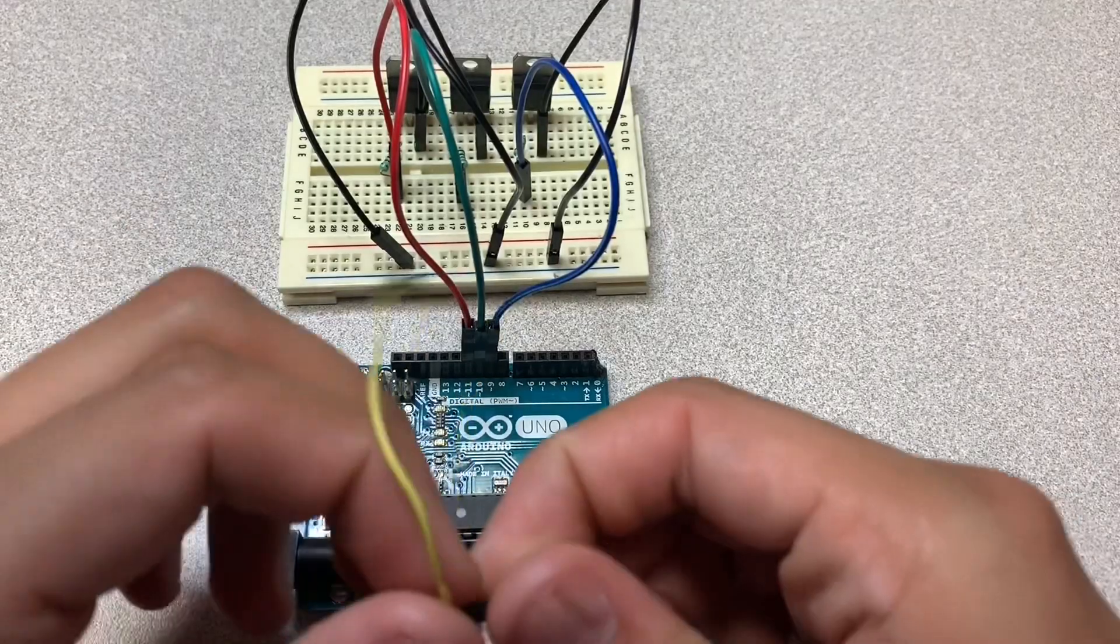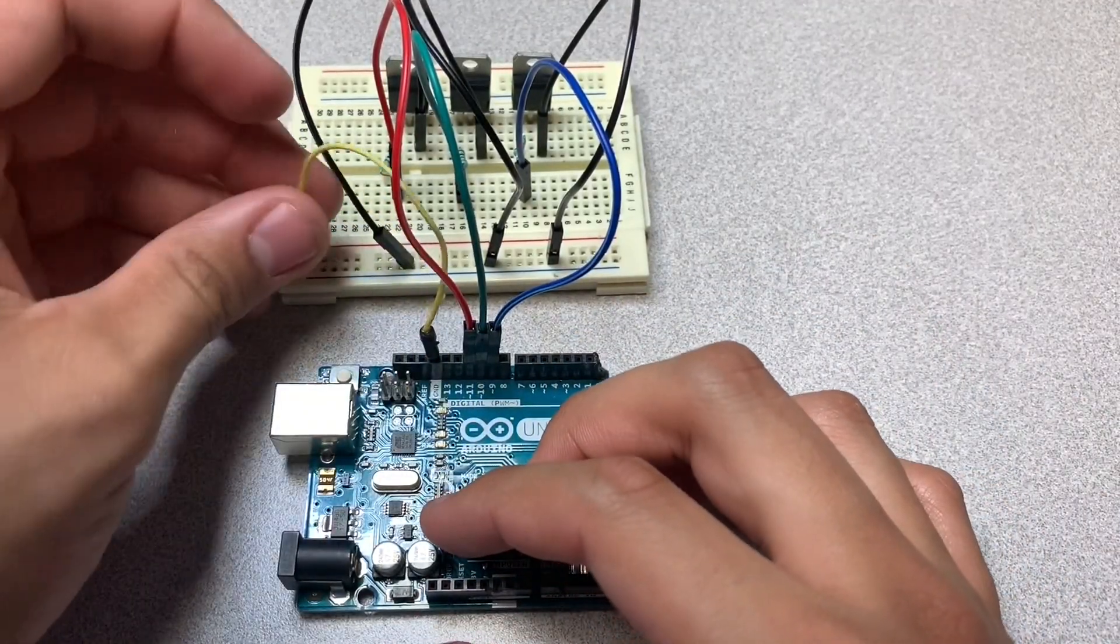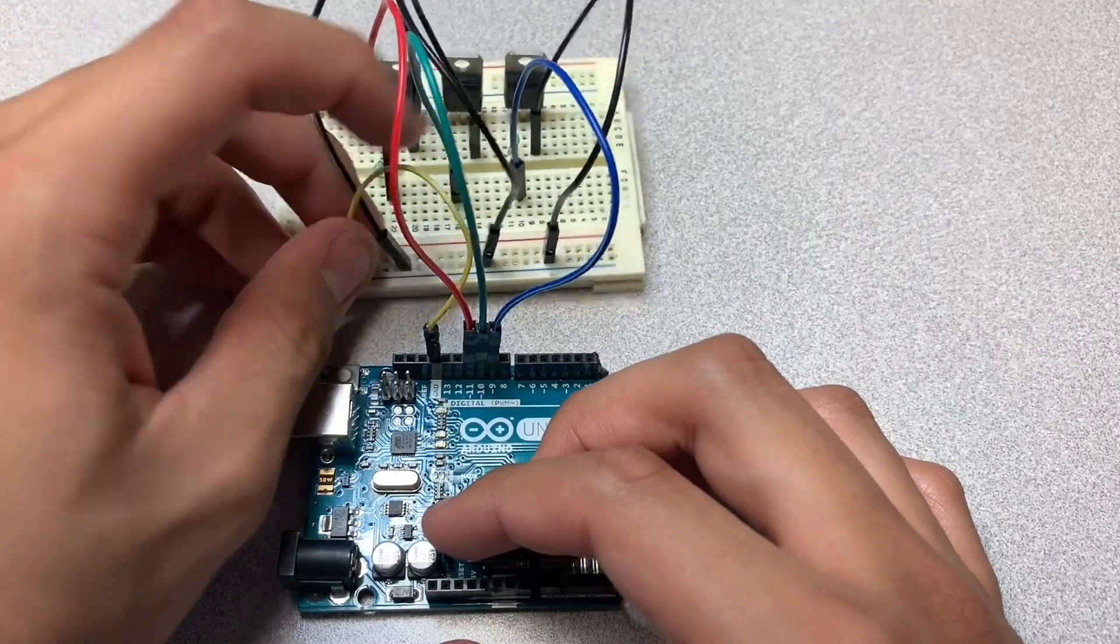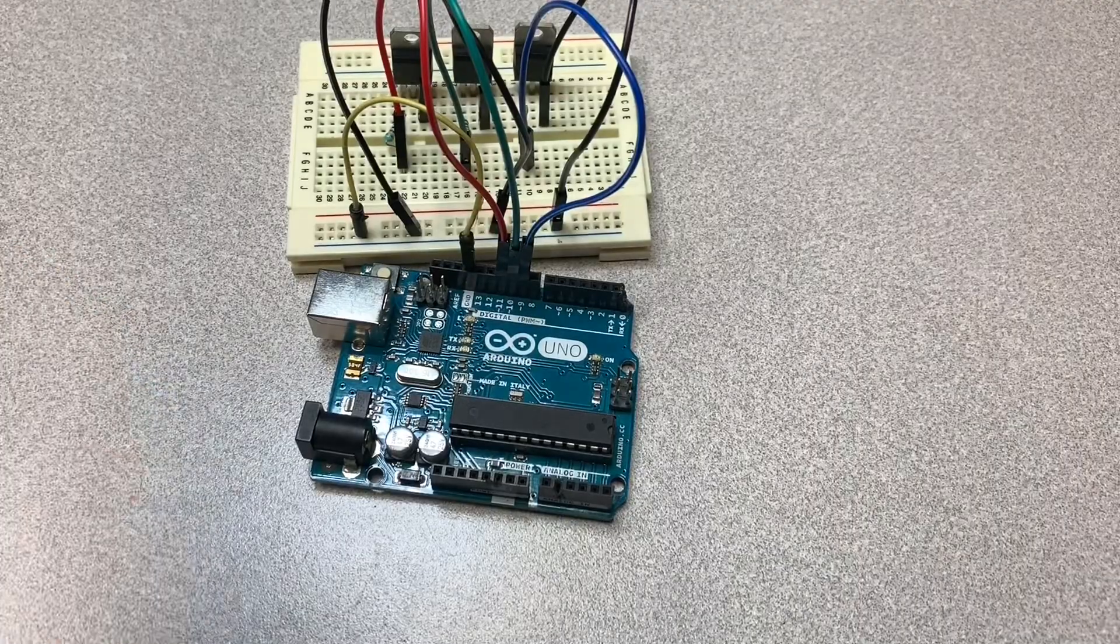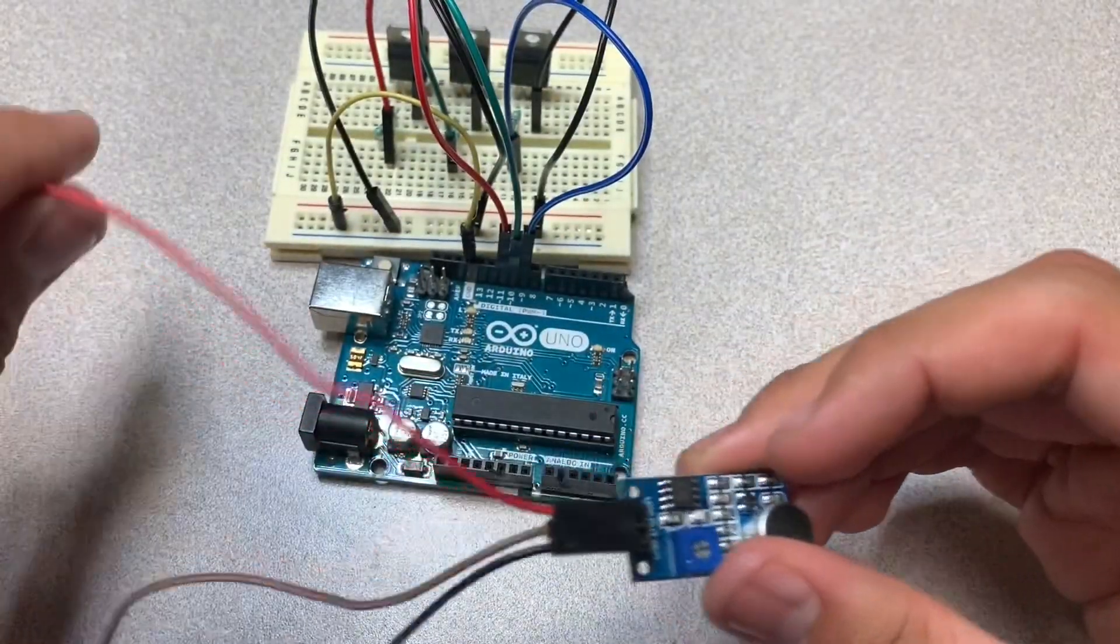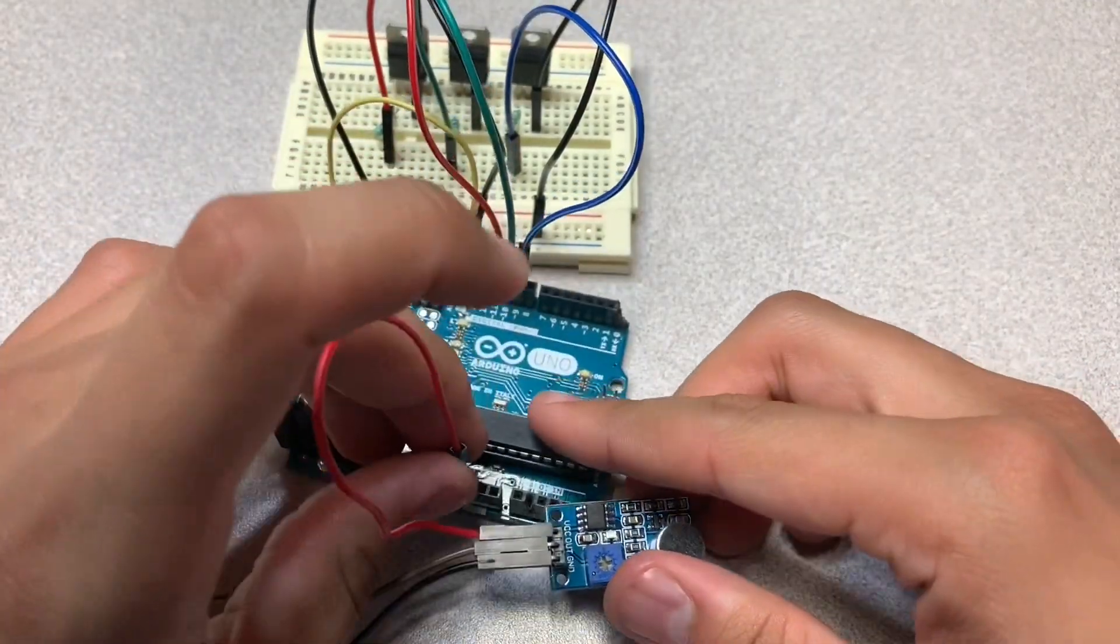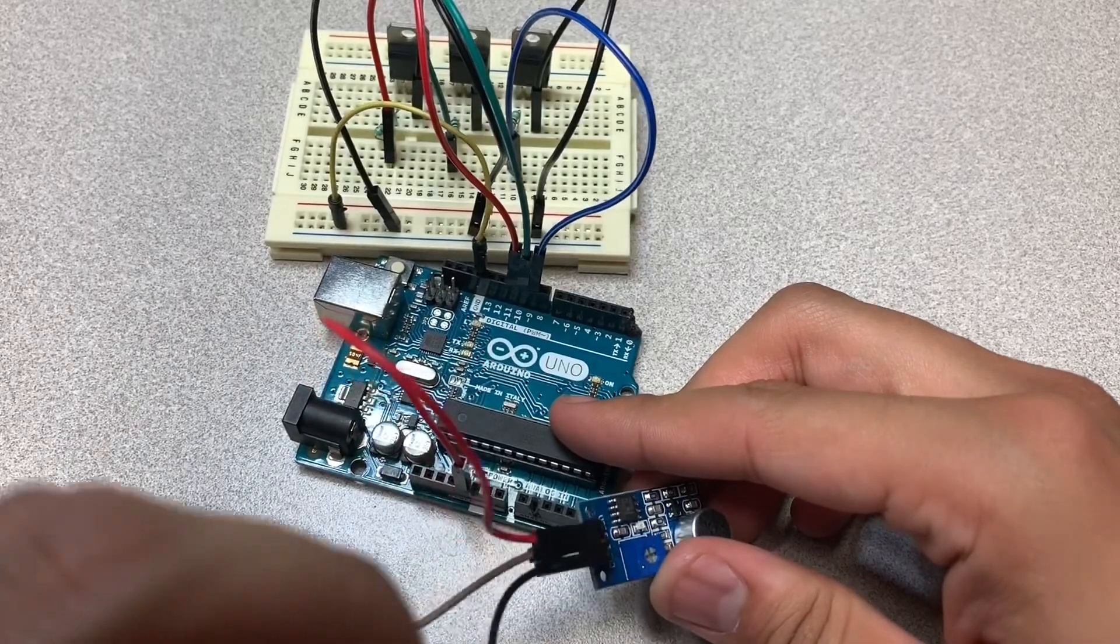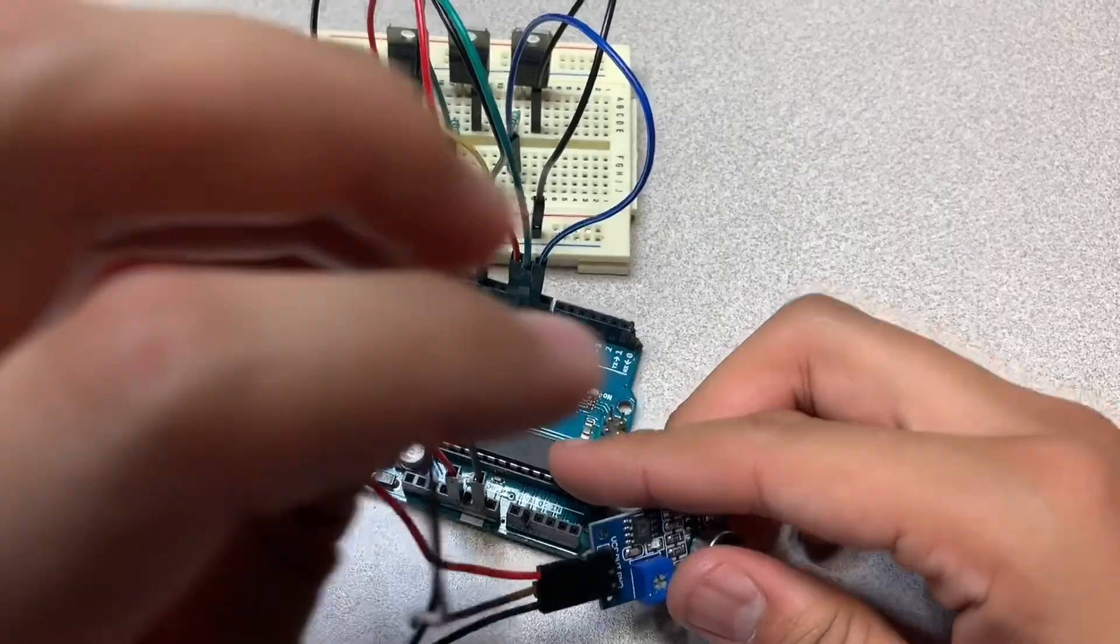Now our Arduino board has a ground section. We're gonna use this yellow cable and ground the rest of our system. Now, we're gonna bring our sensor in the game. We're gonna use our red cable and place it on our Arduino 5 volt pin. Then we're gonna use the black cable, which is the ground, and place it on our Arduino second ground section.